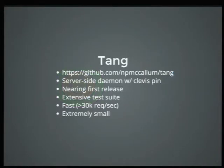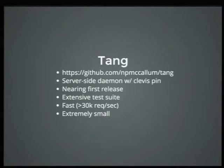This is the project page. It includes the server-side daemon with the Clevis pin, which we'll talk about in a minute. We are nearing our first release, and it has an extensive test suite. It's really fast — we can handle north of 30,000 requests per second. So if you think of a data center with 100,000 machines all coming up across about five seconds, we can handle this on one computer.